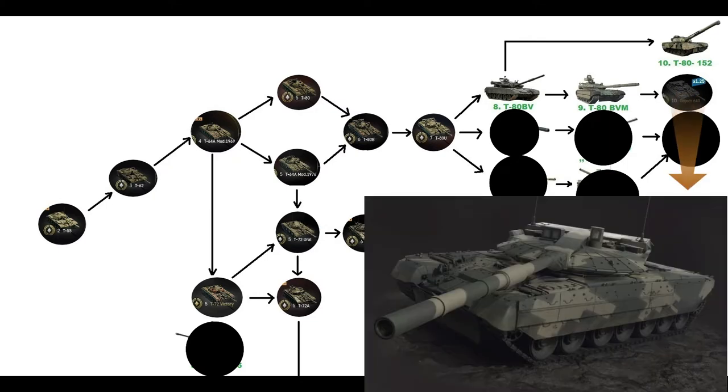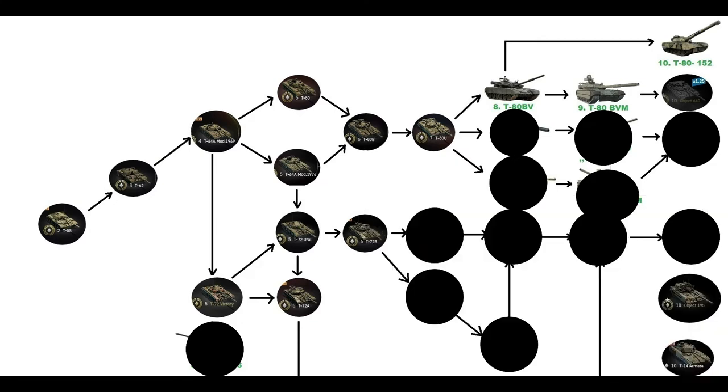Let's keep going to Tier 10, which is the Object 640, known in the game and in real life. In my opinion, it should not have been added as a premium tank for several reasons. In my opinion, T-80 152mm was better as a premium since it has a long gap between years and different eras of development, plus decent armor and a very powerful gun. Object 640 was better as a progressive tank.